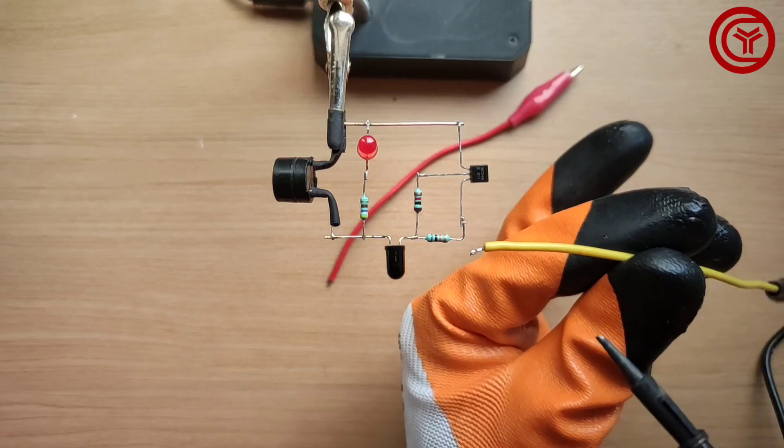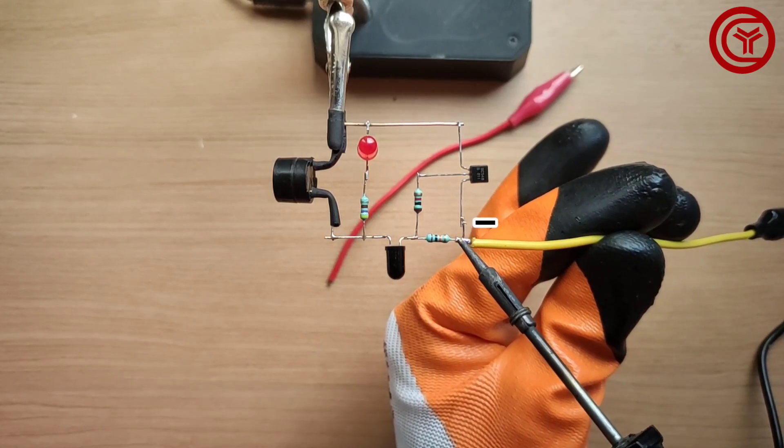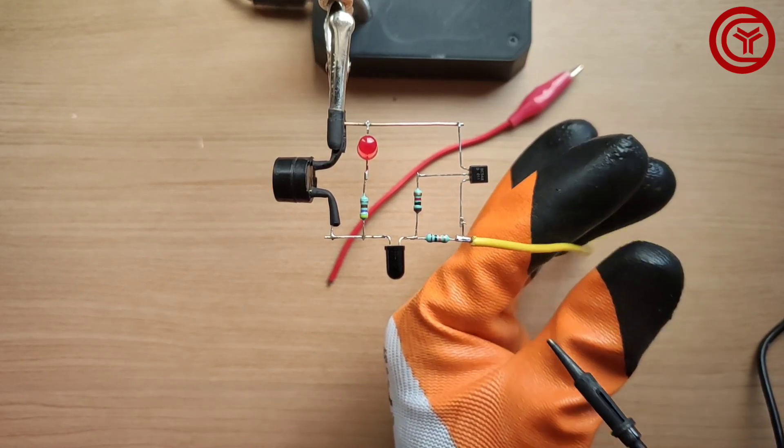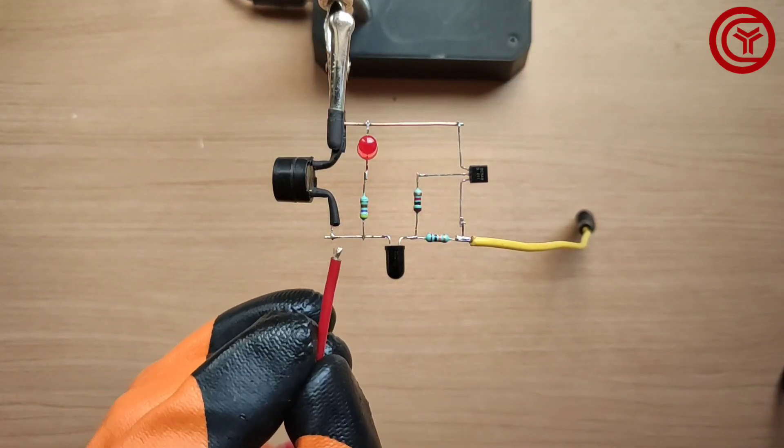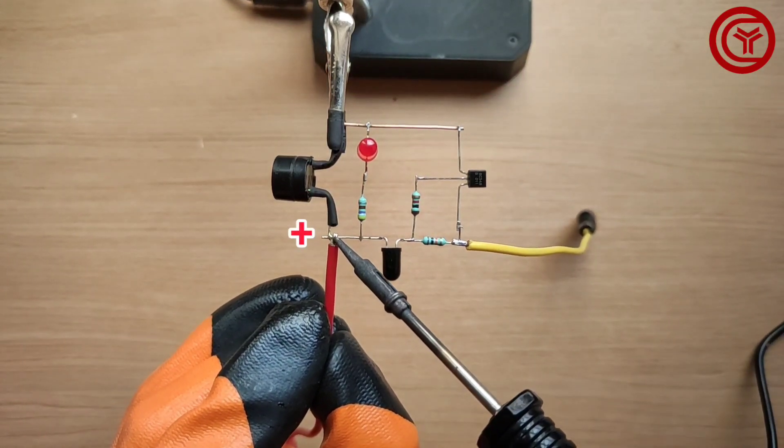Solder the negative wire on the emitter of transistor and solder the positive wire on buzzer positive.